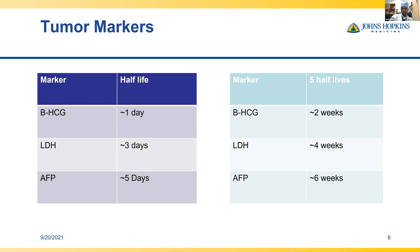Two important tidbits: beta-HCG can be elevated in hypogonadal men due to elevated LH, so always ensure testosterone is adequate — you can give testosterone and recheck beta-HCG. And AFP tends to be elevated in babies, so in our pediatric population with germ cell tumors, AFP can be falsely elevated. If you feel a testicular mass and have an elevated AFP in a young child, you want to recheck it.